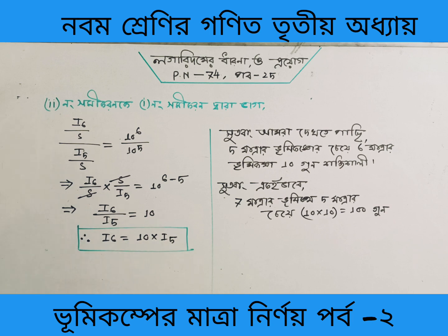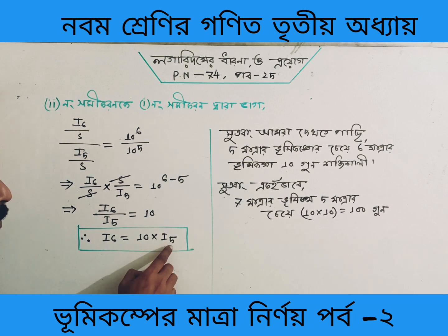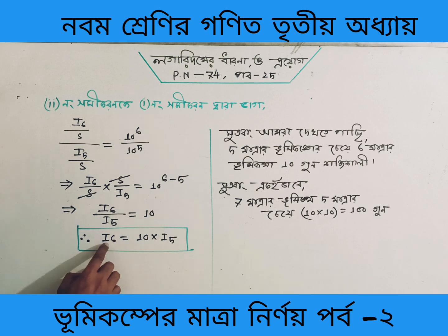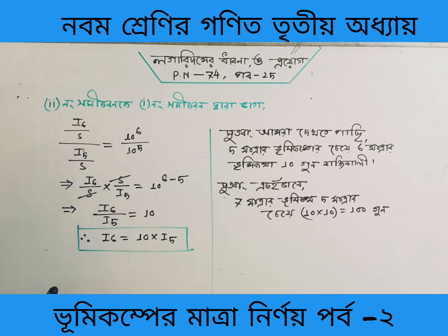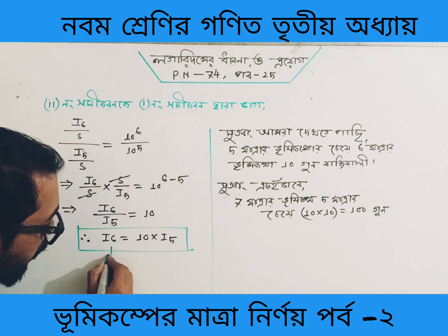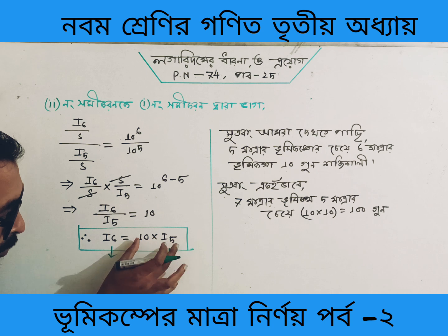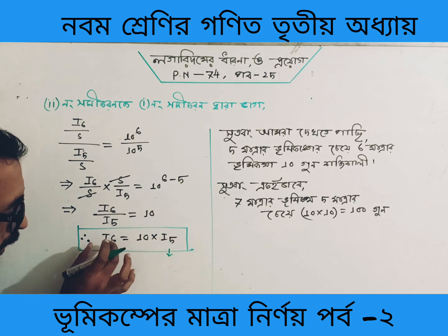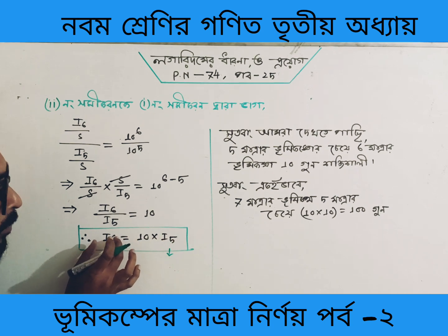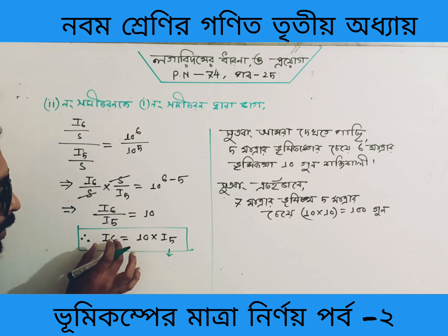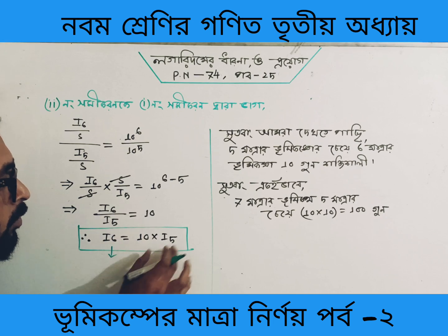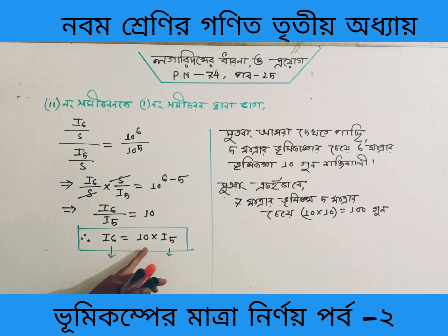So that means a magnitude 6 earthquake is 10 times more intense than a magnitude 5 earthquake. If you are able to count, you can verify that 10 equals 10.